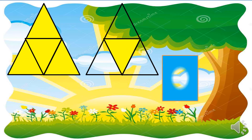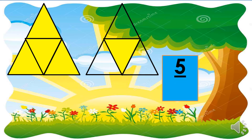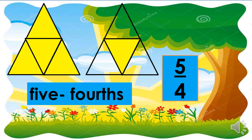How many are the shaded parts in these two triangles? There are five shaded parts, so five should be written as the numerator. And each triangle is divided into four, so four should be our denominator. The fraction symbol is five-fourths. Here is the fraction word: five-fourths.